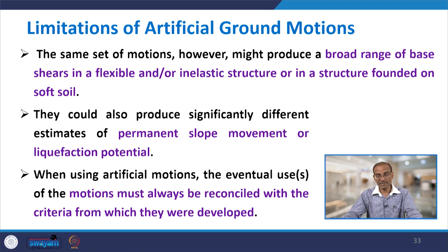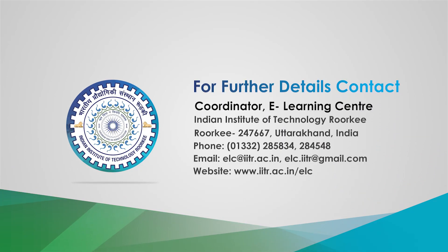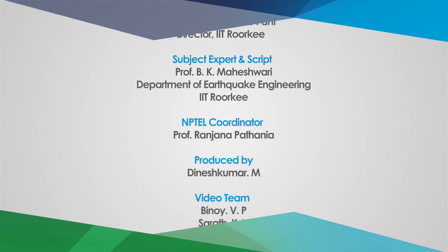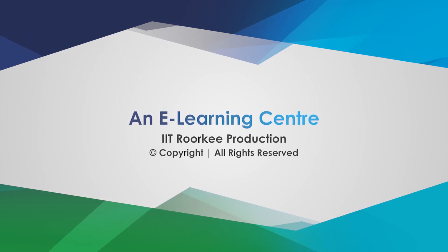When using artificial motions, the eventual use of the motions must always be reconciled with the criteria from which they were developed. With this, I conclude the last lecture on local site effects — module 3 is now finished and almost 50 percent of the course is complete. Thank you very much.